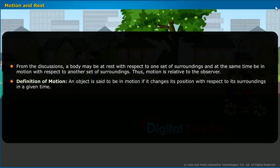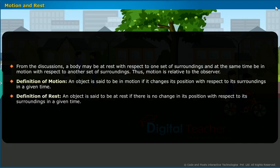Definition of motion: An object is said to be in motion if it changes its position with respect to its surroundings in a given time. Definition of rest: An object is said to be at rest if there is no change in its position with respect to its surroundings in a given time.